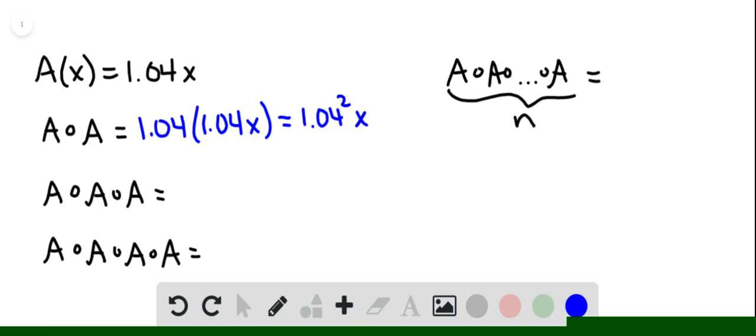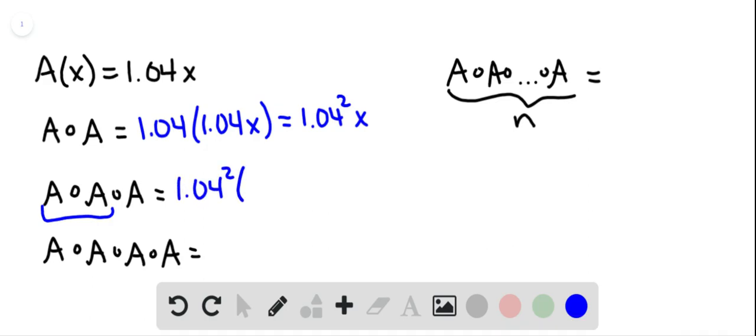Now we find A of A of A. So what we can do, we already know A of A. Let's do it one more time, put A inside that and we get 1.04 squared times 1.04x. So all I did there was I put the original inside the one we just did. And we can simplify that and call it 1.04 cubed x.